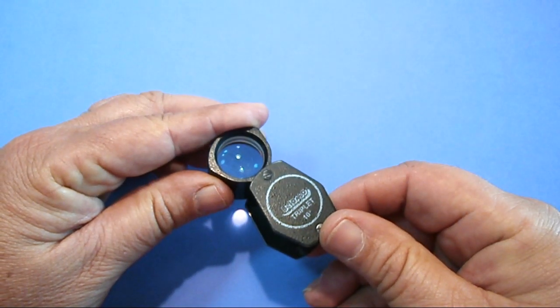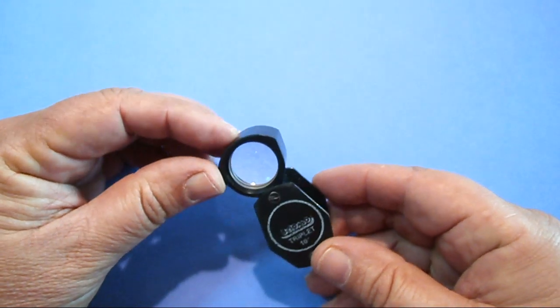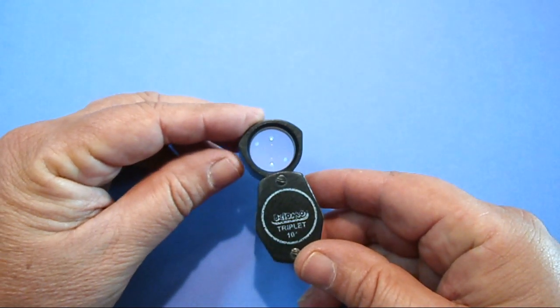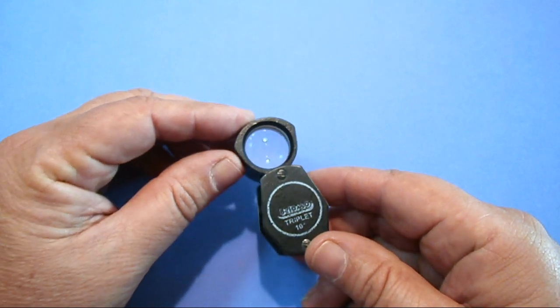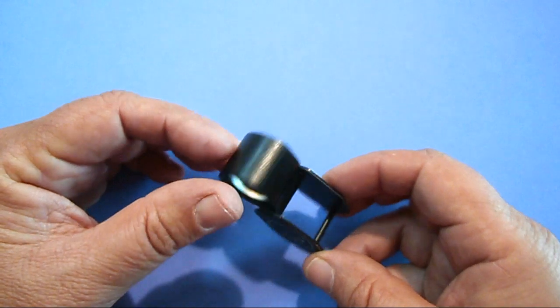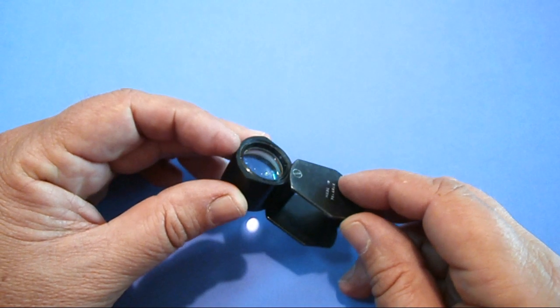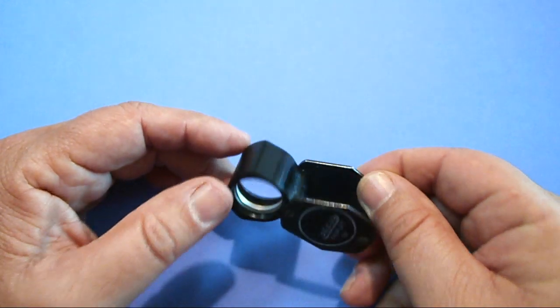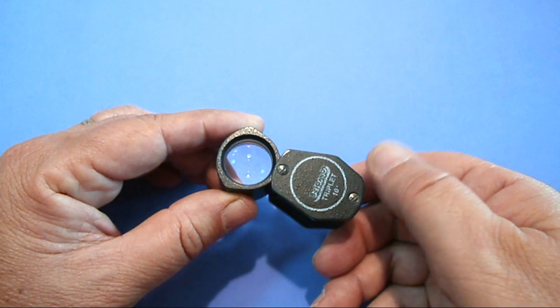So let's talk first about why the triplet 10x loop is the most commonly used loop amongst faceters, people within the gem industry or jewellers. Firstly, the triplet, as said, it has three lenses. It has two outer concave lenses and one central convex lens, which are all glued together.